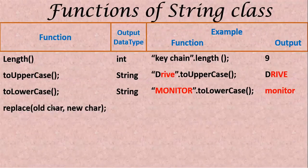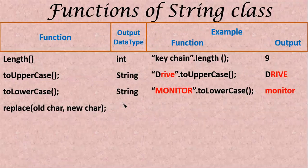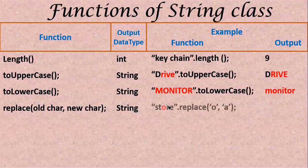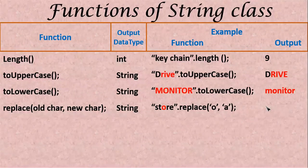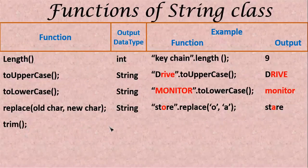The next function is replace(old character, new character) — we give a character available in the string and change it to a new character we want to replace. The output data type is String. For example, "store" dot replace('o', 'a') — here o and a are each given in single quotation as characters. So o is replaced with a, giving the output stare. Next, trim() — the output data type is again String.